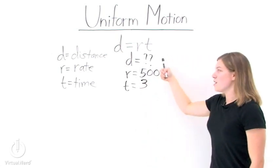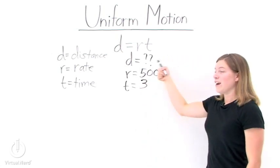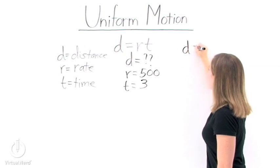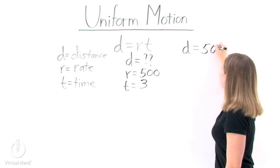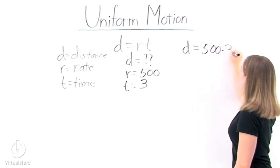So now we have our d, r, and t. To find out what our d actually equals, we plug it into our formula. We have d equals r, which is 500, times t, which is 3.